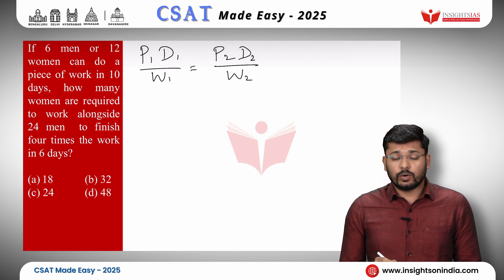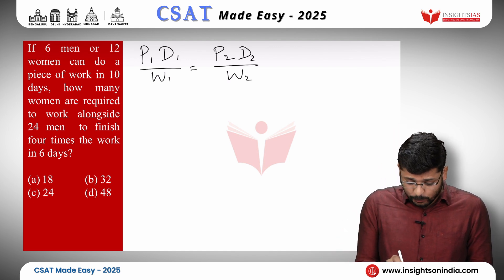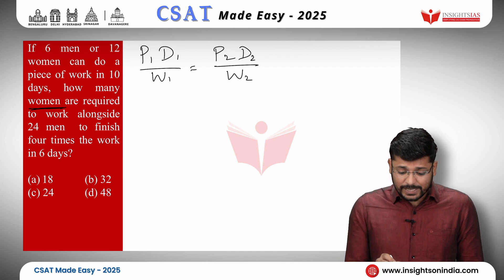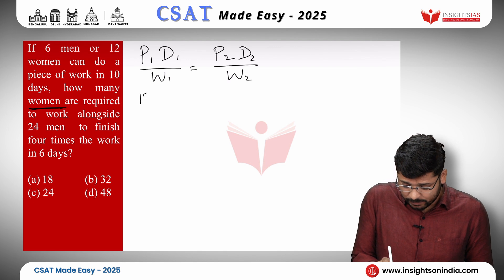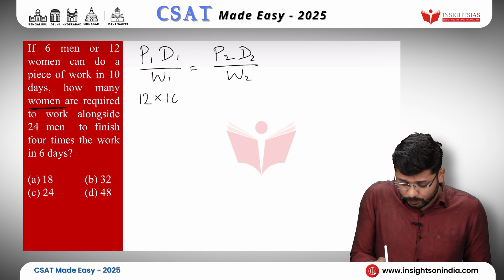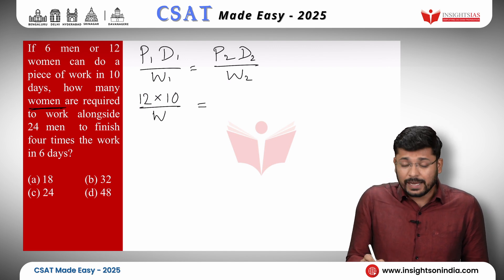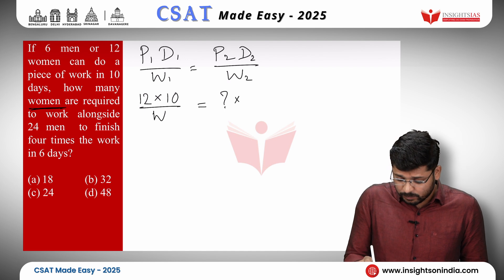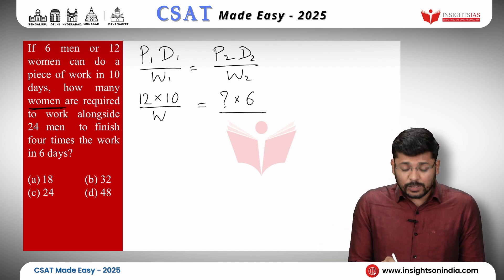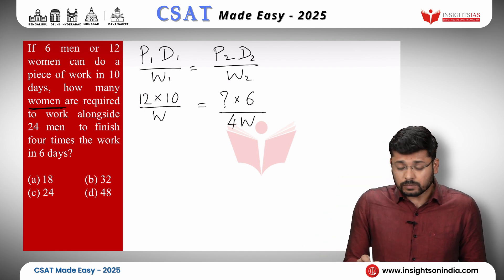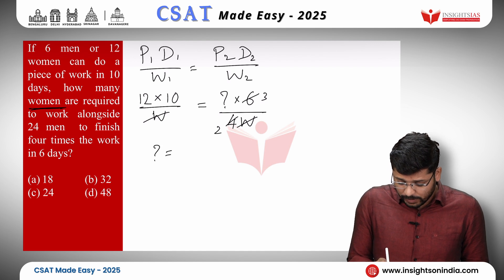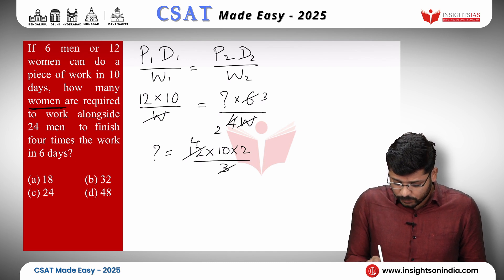In the first case, 12 women can do a piece of work in 10 days, so P1 is 12 and D1 is 10 days, W1 is W. In the second case, how many women are required — P2 is question mark. D2 is 6 days. W2 is 4 times the work, so it would be 4W. W and W get cancelled. 2 divides both 4 and 6 — 2 twos are 4, 2 threes are 6. The value of question mark is 12 into 10 into 2 divided by 3. 3 fours are 12, so it equals 80. So 80 women are required to finish 4 times the work in 6 days.